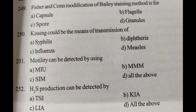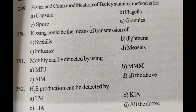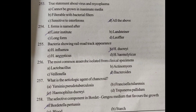H2S production can be detected by. Option A: TSI test. Option B: KIA test. Option C: LIA test. Option D: All of the above. Answer is Option D: All of the above.